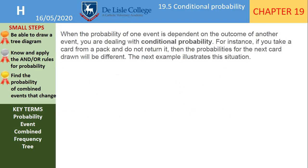When the probability of one event is dependent on the outcome of another, we're dealing with conditional probabilities. For instance, if we take a card from a pack and do not return it, the probabilities for the next card drawn will be different.